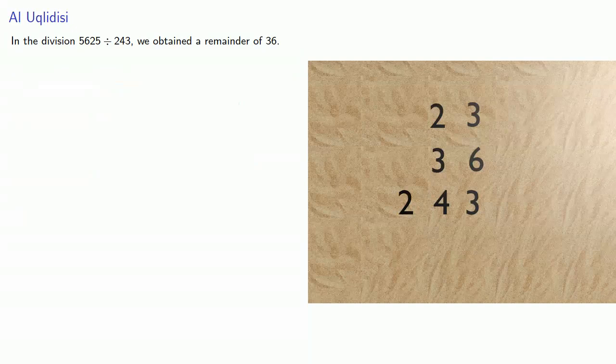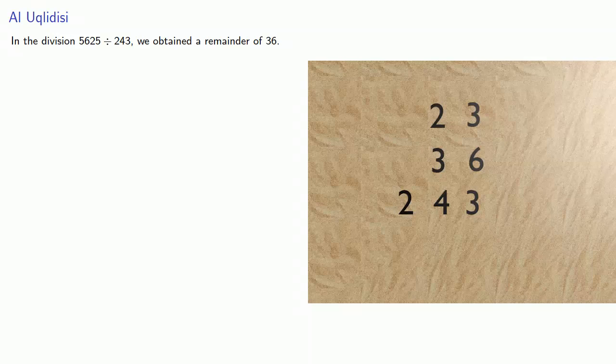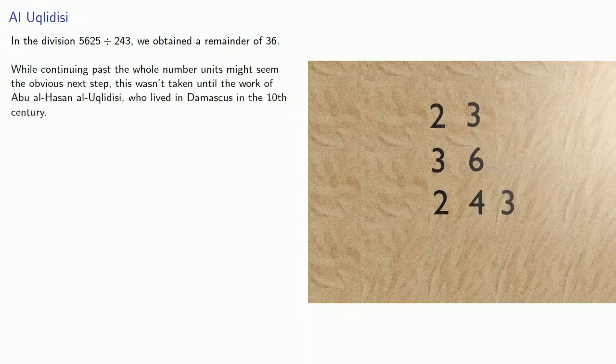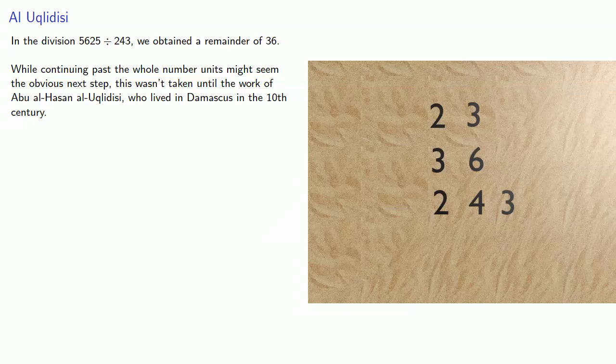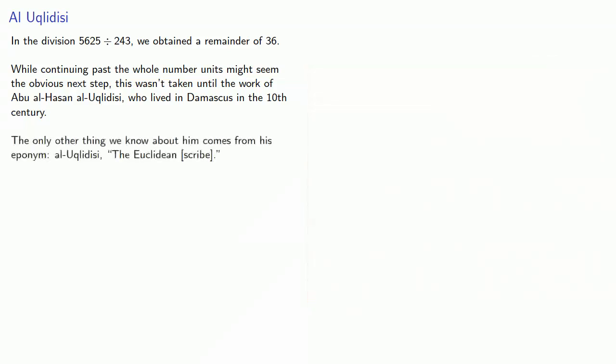In the division 5625 by 243, we obtained a remainder of 36. While continuing past the whole number units might seem to be the obvious next step, this wasn't taken until the work of Abu al-Hassan al-Uklidisi, who lived in Damascus in the 10th century. The only other thing we know about him comes from his eponym, al-Uklidisi, the Euclidean scribe.